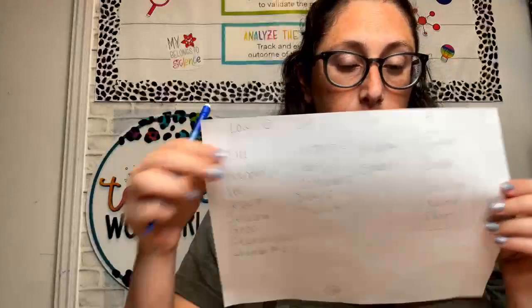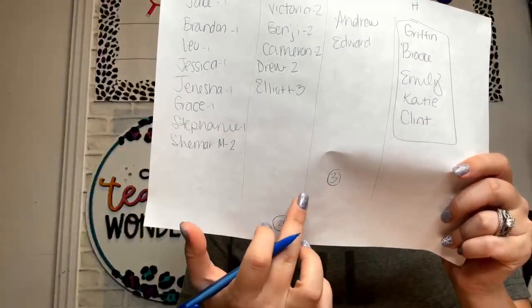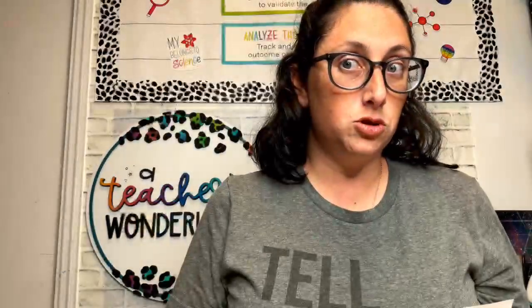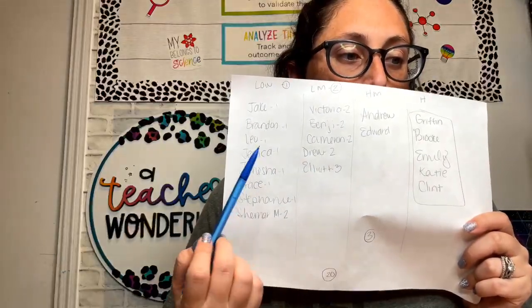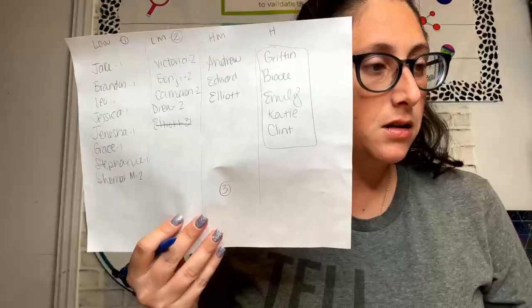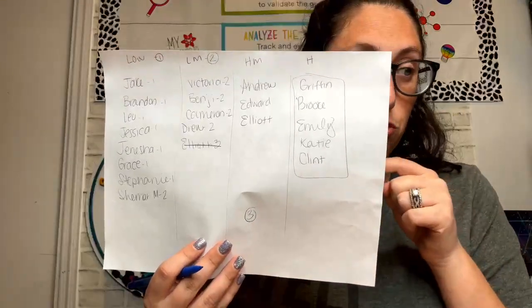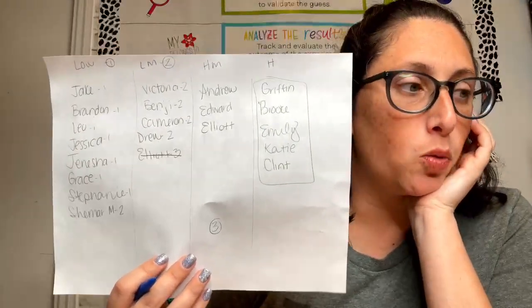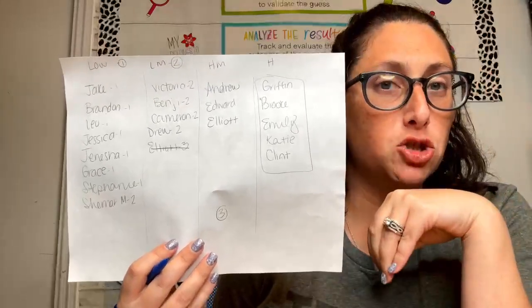So what am I going to do? First, I see Elliot can probably get popped over to the high-medium group — I'm going to cross off Elliot's name and add him there. Now my group two is down to four. I need to make sure I get some of my twos moved higher so I can fill spots in group three.